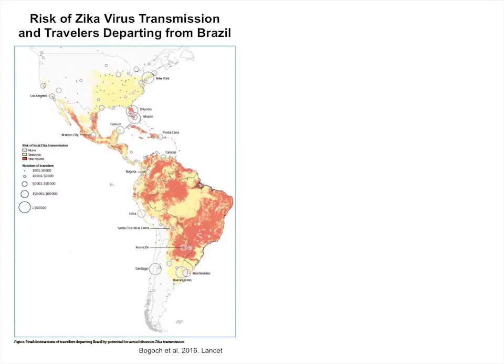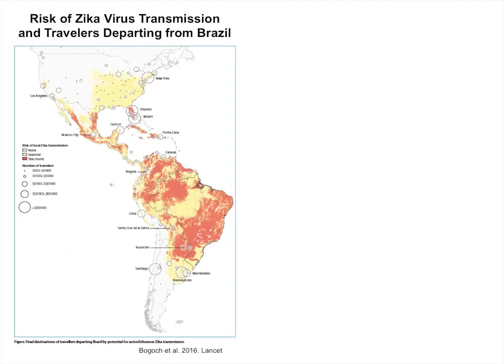The circles on the map indicate — the larger the circle, the more people from Brazil are flying into that city. Brazil is right now an epicenter for Zika. So this map indicates where might be receptive for introduction of the virus, and where the virus might be introduced by people flying in. If you look at Florida, it's orange, and Orlando and Miami have big circles. That's a place where it could conceivably be introduced. This is something we can use to determine where we should be looking for introduction and transmission in the United States or elsewhere in Latin America.